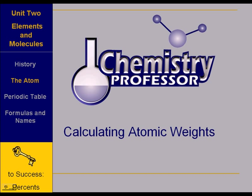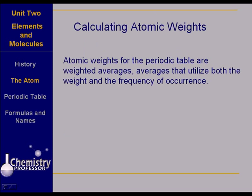The key to success in calculating atomic weights for use on the periodic table is knowing how to use percents, both as percent expressions and in decimal form. Atomic weights for the periodic table are weighted averages, and it's important that you remember this. They are averages that involve both the weight and the frequency of occurrence of the various isotopes.